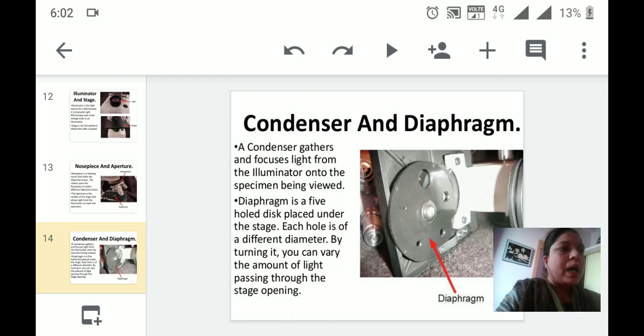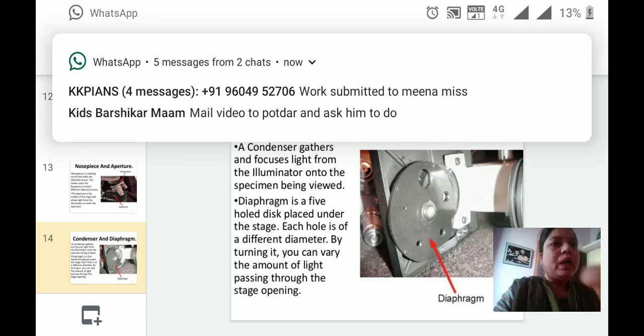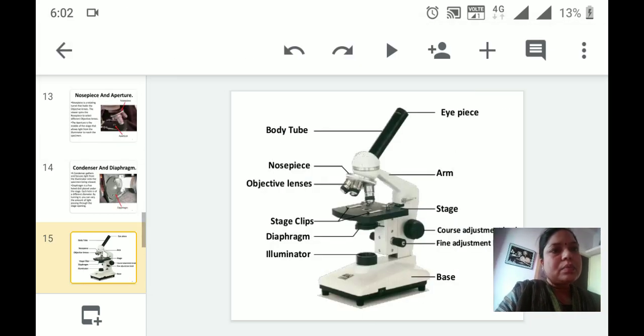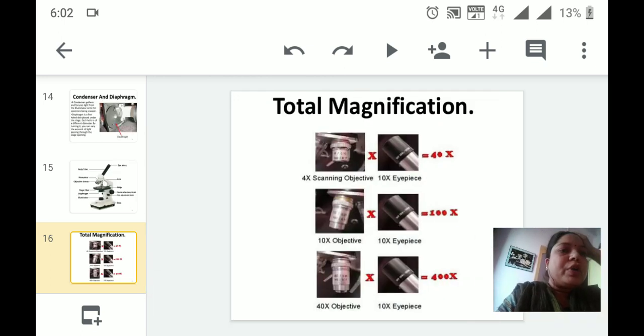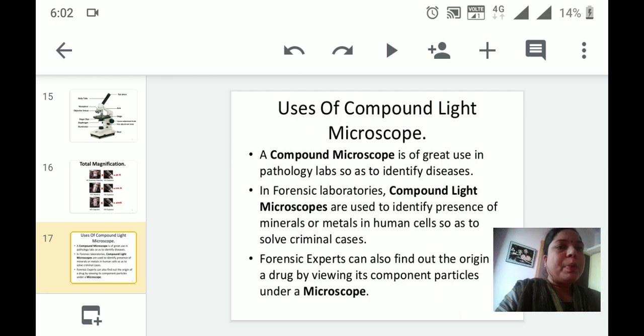This is the diagram showing compound light microscope. Total magnification: In case of 4x scanning objective, 10x eyepiece can be used. For 10x objective, 10x eyepiece again. For 40x objective, also 10x eyepiece can be utilized. Uses of compound microscope: The compound microscope is of great use in pathology labs to identify different disease-causing agents.